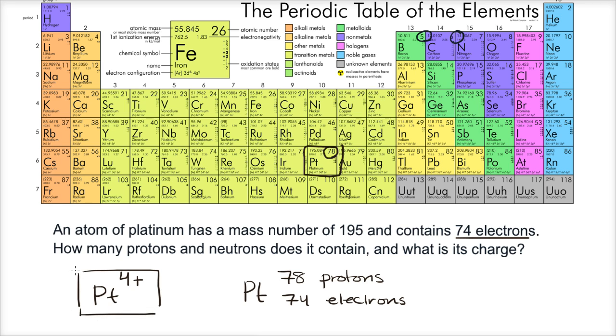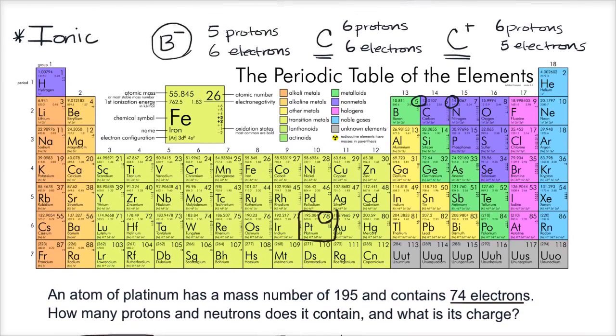The general term when we're talking about a positive ion, we're talking about a cation. That is a positive ion. Up there, when we talked about boron being negative, a negative ion, that is an anion.